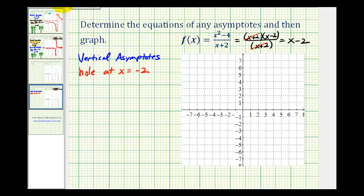So this graph is going to be the graph of the line y equals x minus two, except it will have a hole at x equals negative two.